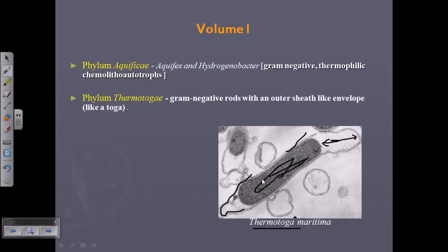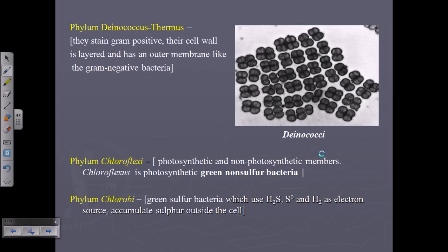Thermotoga is a gram-negative, rod-shaped bacteria with a very interesting sheath-like envelope structure. We can also talk about the phylum Deinococcus-Thermus in this context.